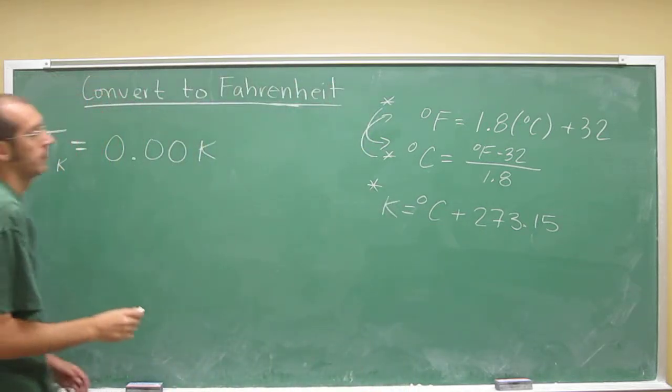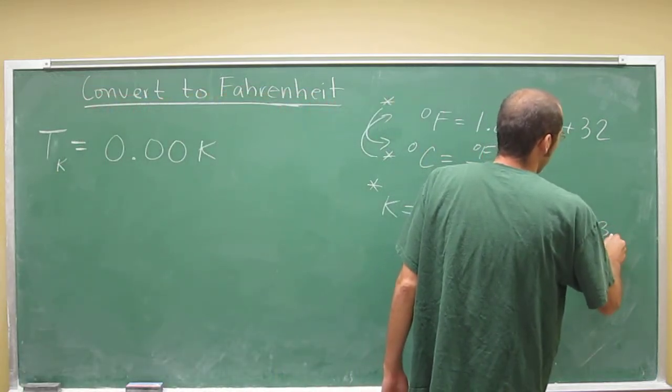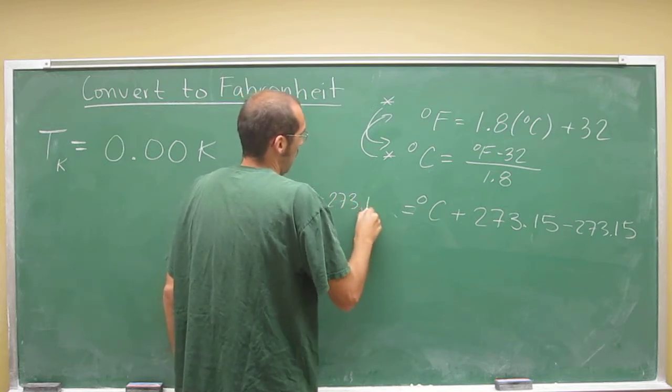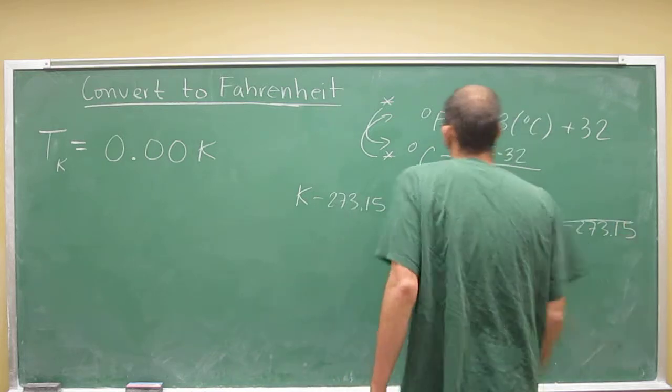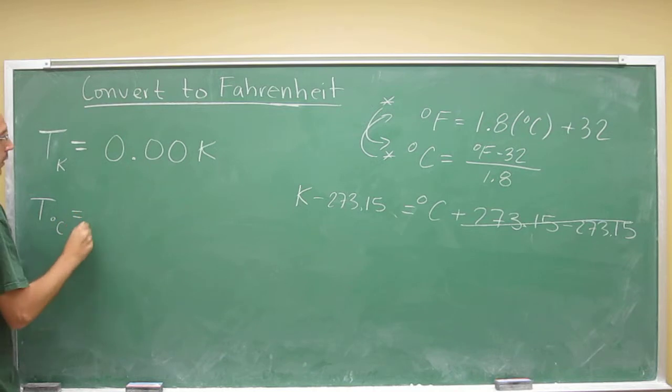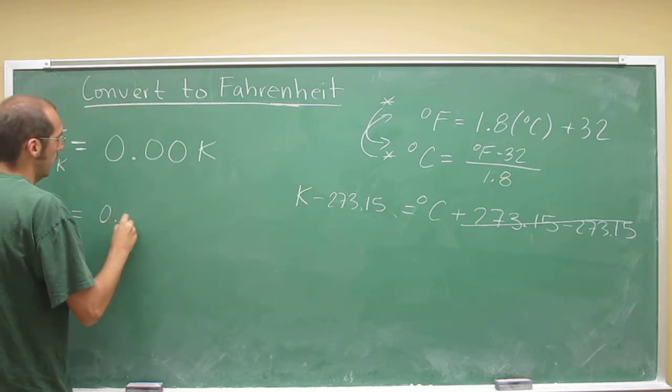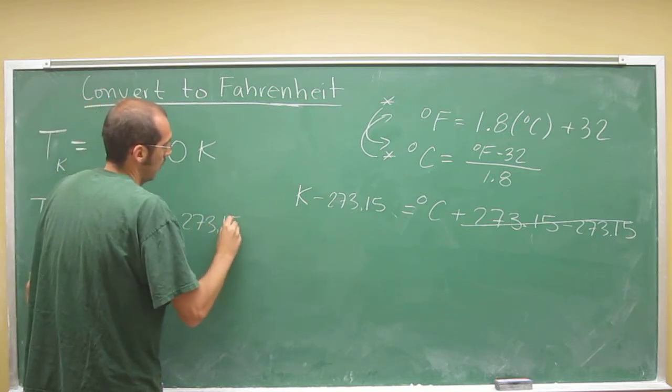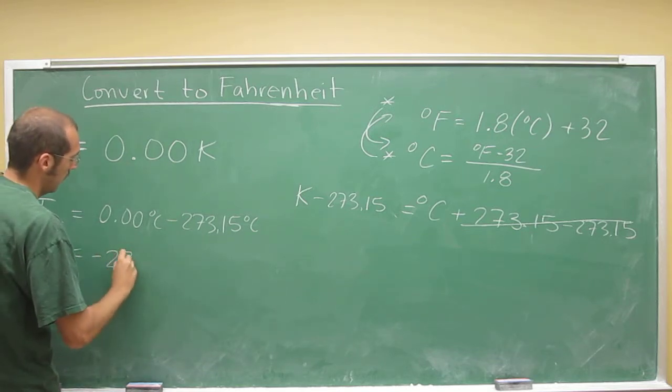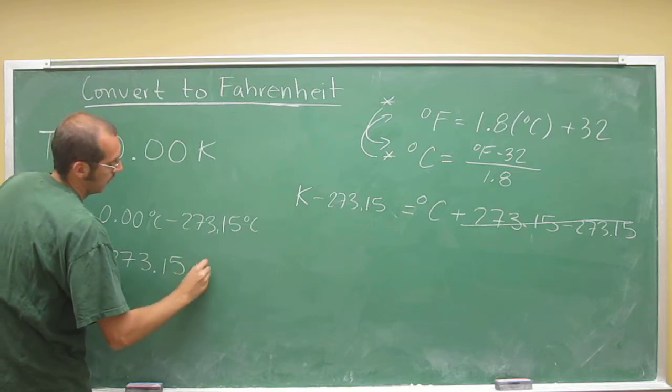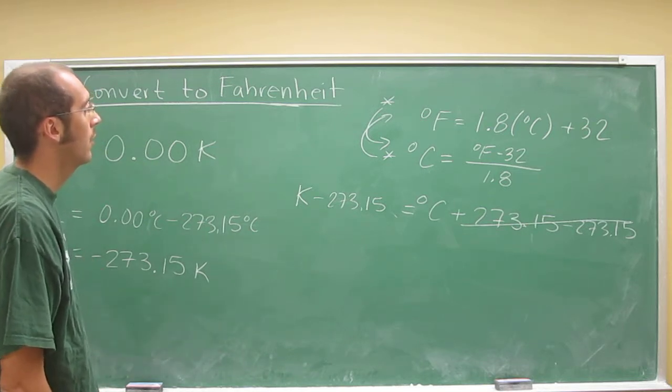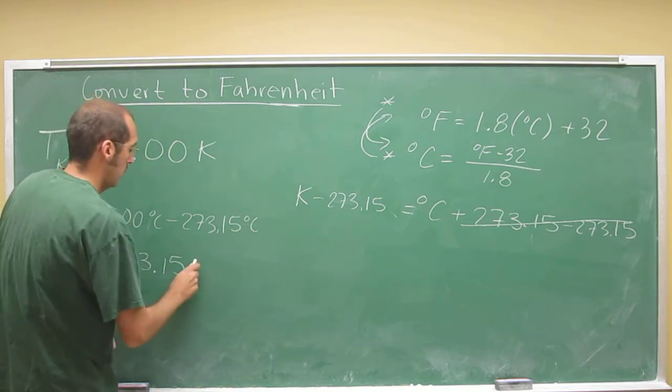So remember, how do I do that? Well, I've got to subtract 273.15 from both sides here. And when I do that, cancel it. So I get temperature in degrees Celsius is 0.00 minus 273.15. So minus 273.15 Kelvin. So we can keep all of the units because we're adding and subtracting.